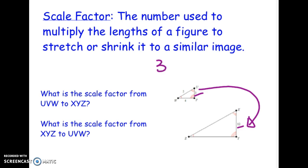We're going to have to pay attention to 3 and 12. So basically you're asking yourself 3 times what equals 12. That one's pretty easy. You're going to know that 3 times 4 equals 12. So the scale factor from UVW to XYZ is 4.